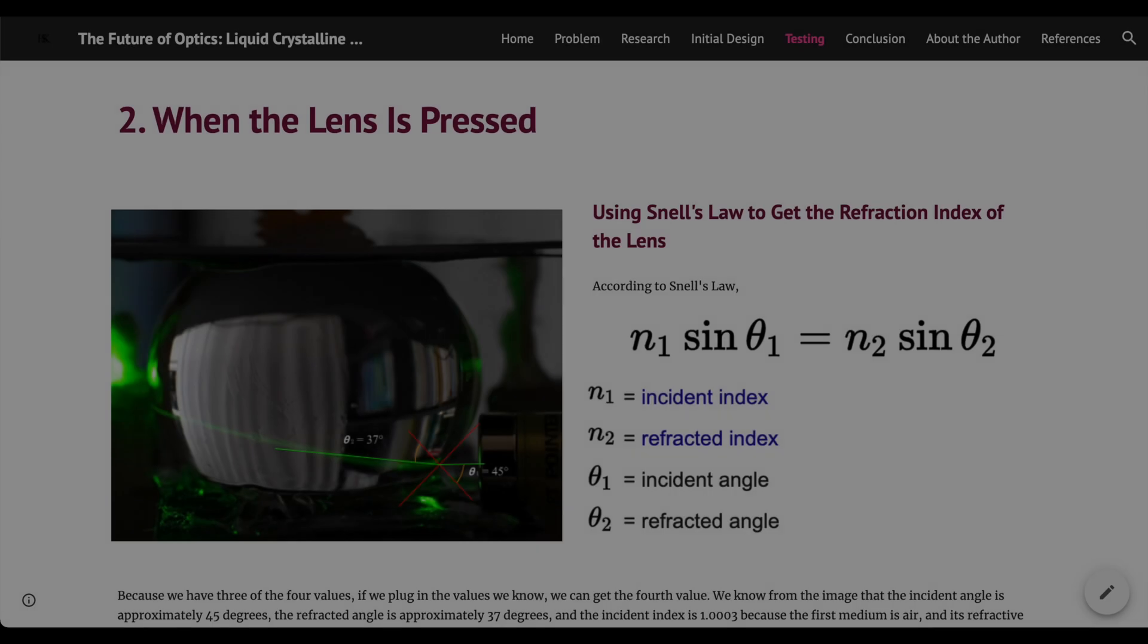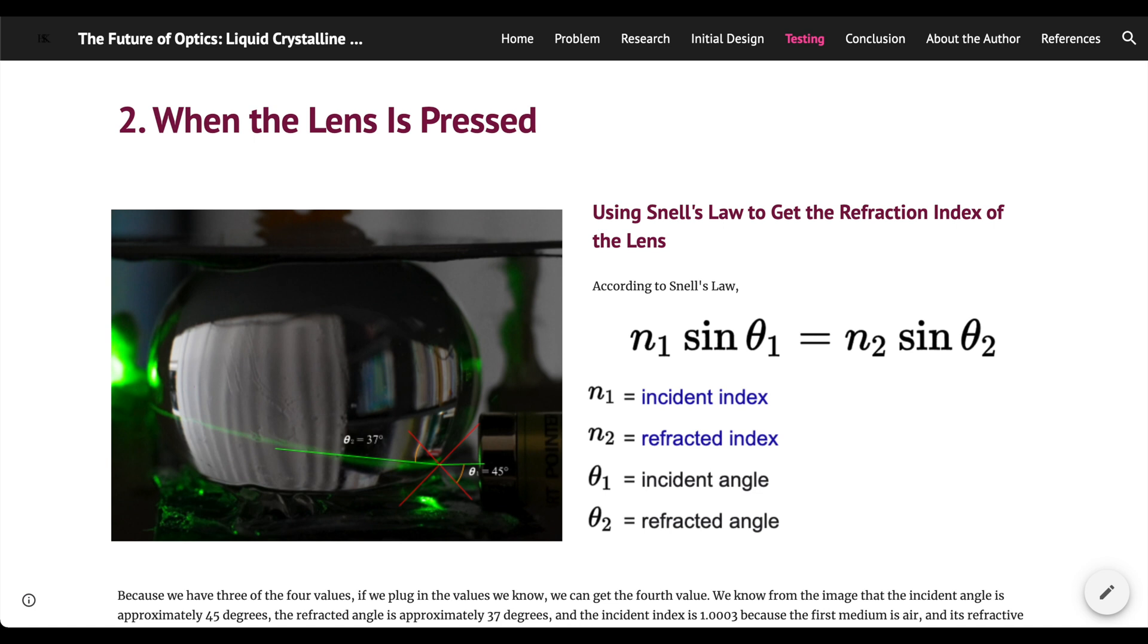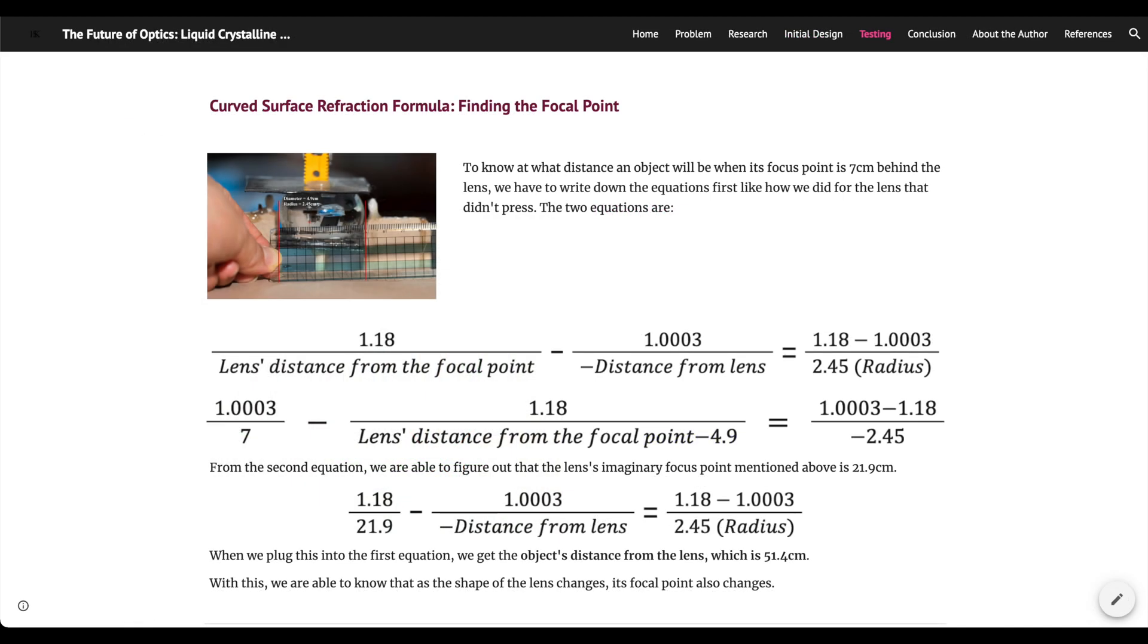This means that when the object is 30cm away from the lens, the light rays are going to meet 7cm behind the lens. The same can be done when the lens is pressed, and because the substance didn't change, the refractive index is still 1.18. It is also proven by the image shown. To calculate where an object needs to be, to be in focus when the camera is kept still, we have to repeat the process before, and we get that when the camera is 7cm behind the lens, an object has to be 51.4cm away from the lens to be in focus. This is shown in this video, and as the lens gets pressed, the image closer to the lens becomes more blurry than when the lens isn't pressed. This is because as the lens gets pressed, we figure out that the focal point becomes farther away from the lens, and if the focal point gets shorter, things behind the focal plane are going to become blurrier.